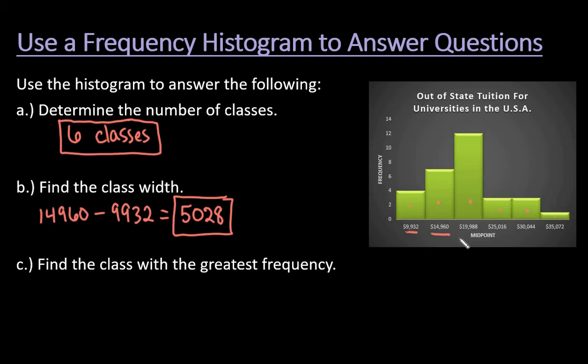It doesn't matter which two. I could have also picked 25,016 minus 19,988. Any two consecutive differences will give you the same answer.